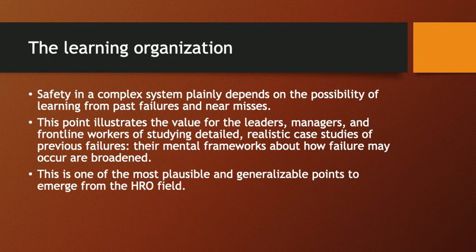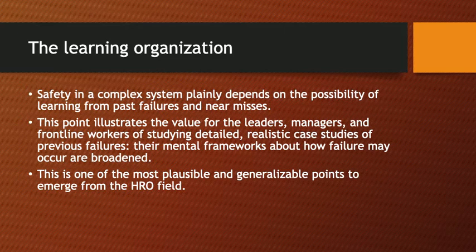The learning organization is one very important part of what high reliability organization theory allows us to learn. An organization involved with the possibility of hazard to the public really needs to look at itself as a learning organization. It needs to learn from past near misses, from past perhaps minor failures, and figure out how that failure or near miss occurred. That means having a reporting opportunity for all workers, all contributors, and all members of staff to bring forward their concerns about incidents — and then to investigate those incidents.